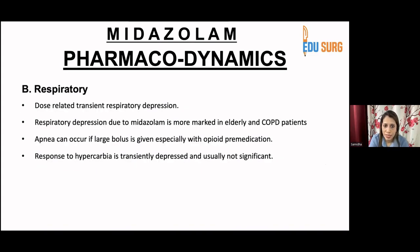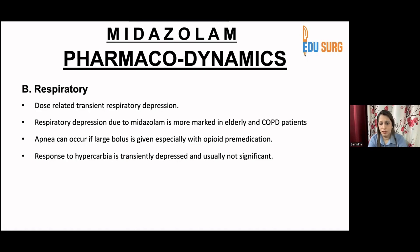Respiratory effects: there is dose-related transient respiratory depression. If given within dose or in a titrated way, it can still be very safe. Respiratory depression is more pronounced in elderly patients and those with pre-existing lung disease. Apnea can occur with very high doses, especially in combination with an opioid due to synergism. Response to hypercarbia is transiently depressed, but this is not highly significant.